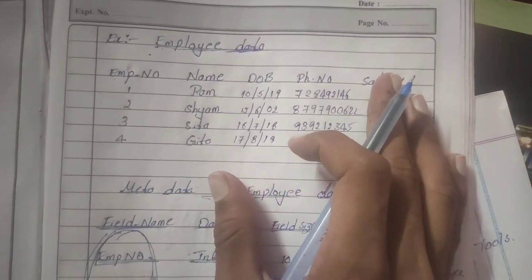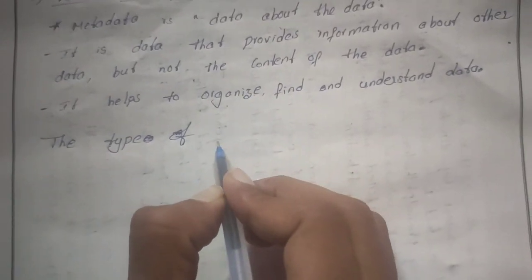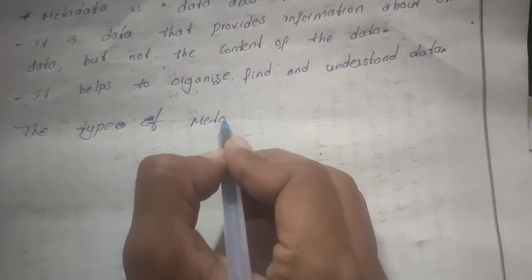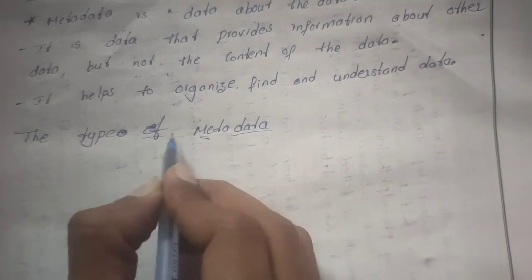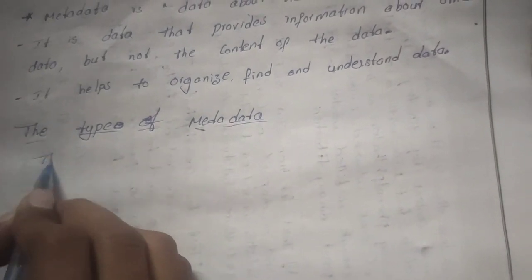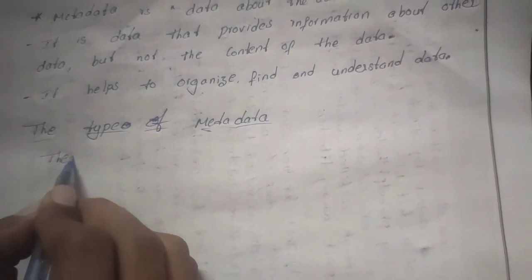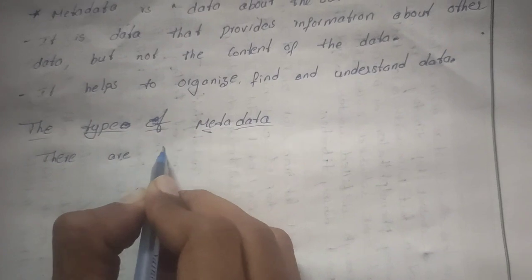The description of each particular attribute is the metadata of the employee data. Now let us look at the types of metadata. There are three types.